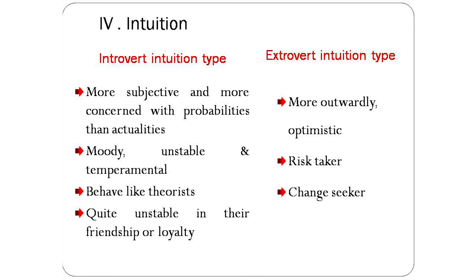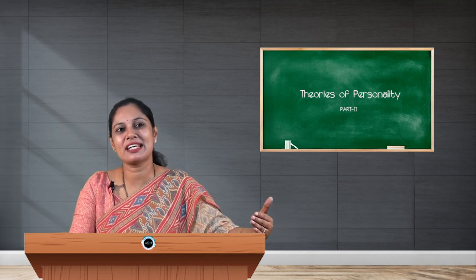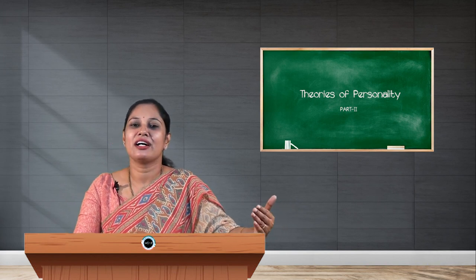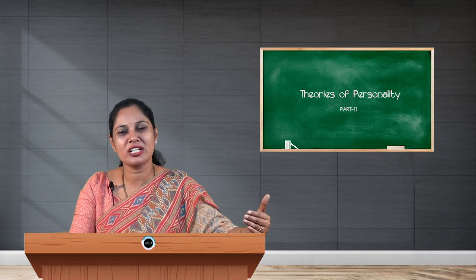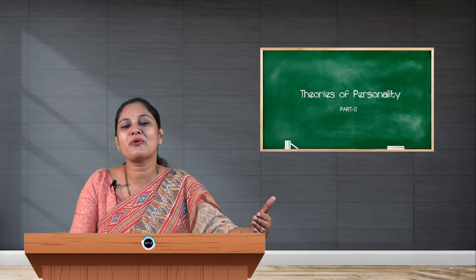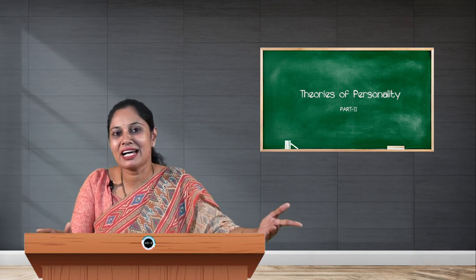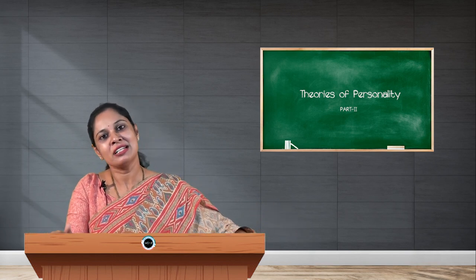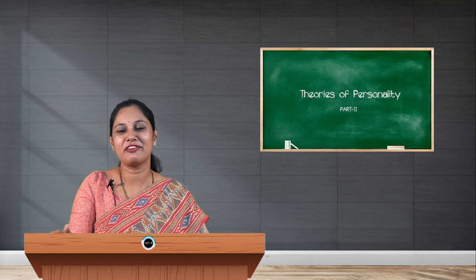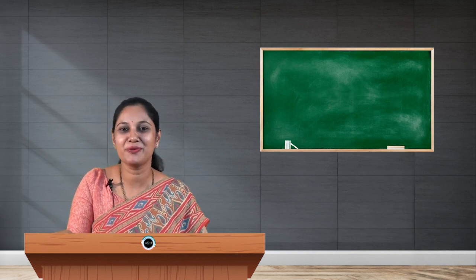So these are the four basic personality types in Carl Jung's classification — thinking, feeling, sensation, and intuition — each divided into introvert and extrovert, giving us the eight personality types. Thank you.